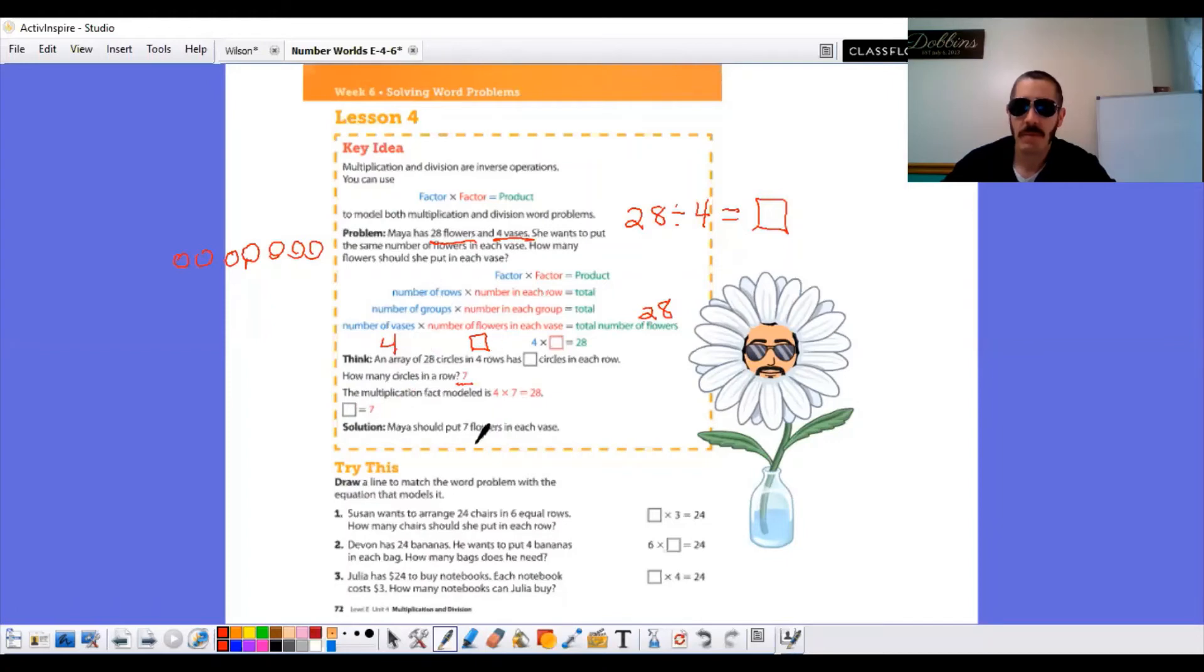And then this is a word problem. So we would say seven flowers or Maya should put seven flowers in each vase. For the try this, draw a line to match the word problem with the equation that models it.